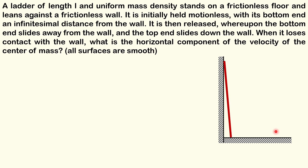Hello students, let us see this problem. This problem says that there is a uniform ladder of length L. We can assume this ladder to be just like a rod. So there is a rod of length L which is initially in almost vertical situation. Once this rod is gently pushed towards the right, it will start sliding down. All the surfaces are smooth and completely idealized. After some time this rod will lose contact with the vertical wall, and at that instant you have to determine the horizontal component of the velocity of the center of mass.